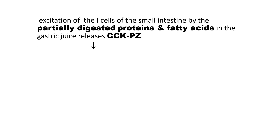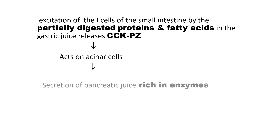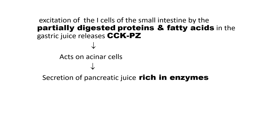In the intestinal phase, partially digested proteins and fatty acids excite the S cells of the small intestine, releasing cholecystokinin. Cholecystokinin acts on the acinar cells, stimulating secretion of pancreatic juice rich in enzymes.